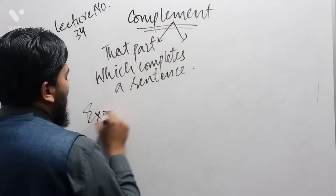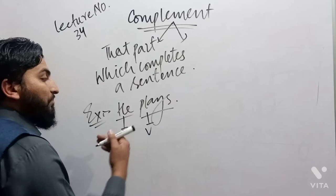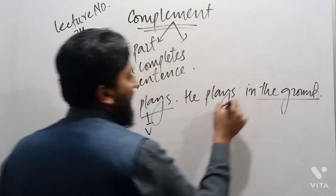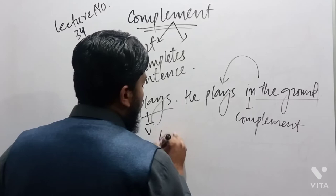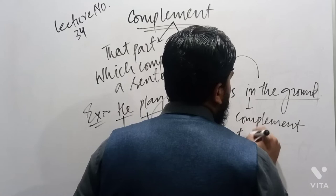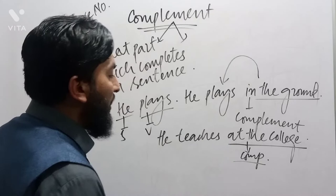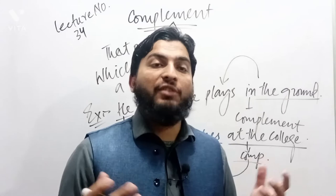For example, I say 'he plays' — this is a clause where 'he' is the subject and 'plays' is the verb. But when I want to complete this clause, I say 'he plays in the ground.' Here, 'in the ground' is called the compliment because it completes the clause. Similarly, 'he teaches at the college' — 'at the college' is the compliment. This means subject plus verb is completed by the compliment, which is used after the verb.